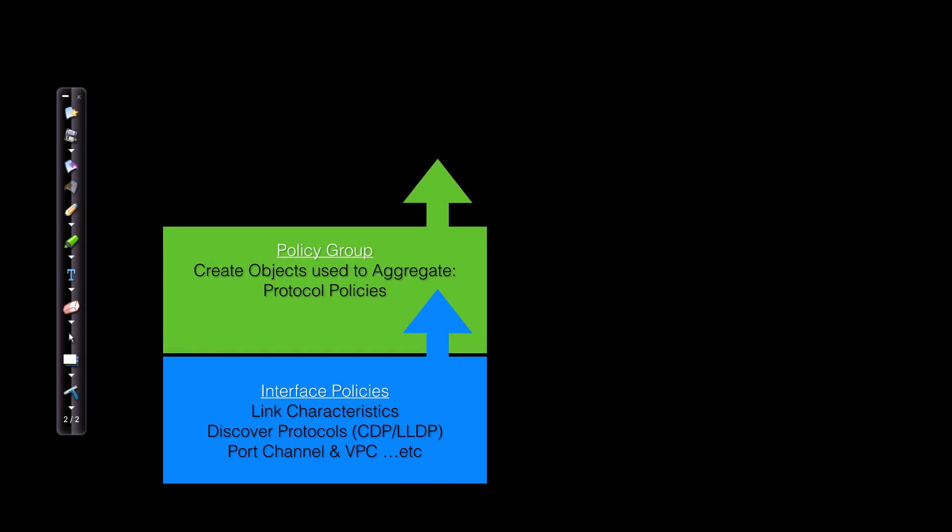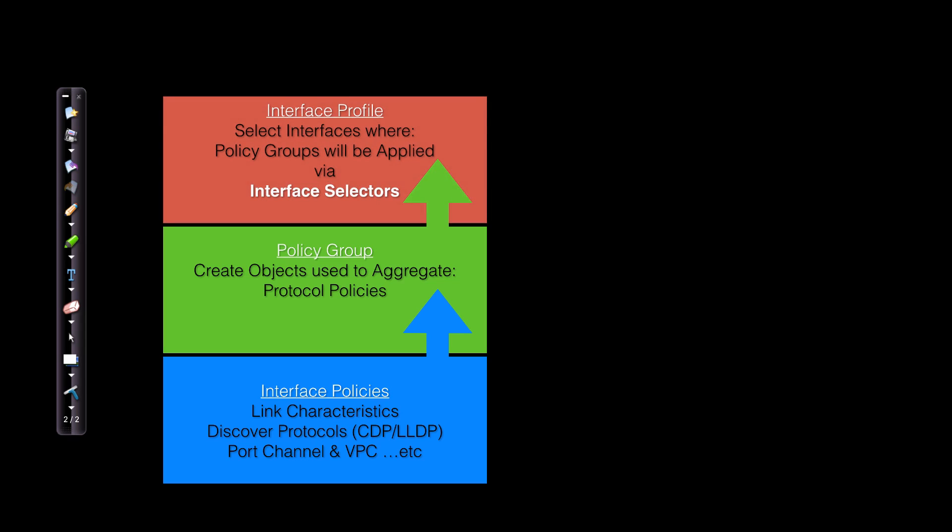Then I'm going to take those individual policies and aggregate them. I'm going to create a policy group, which is a managed object that will detail all of the interface policies I want to utilize. The key word here is aggregate — I'm going to aggregate those into a single object, and then I can apply that object to actual interfaces.